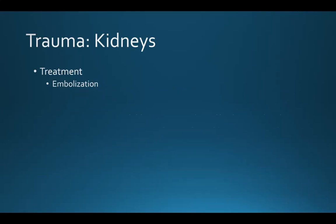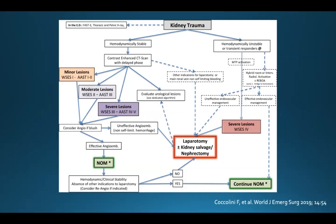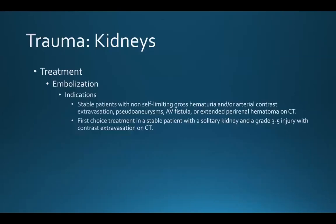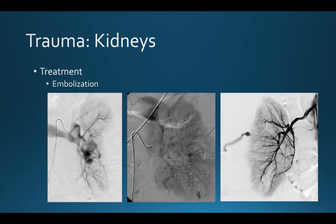Embolization plays an important role in renal trauma. An algorithm published in 2019 in the World Journal of Emergency Surgery shows that patients with every single grade of renal injury can potentially be candidates for embolization based on CT findings. We typically perform embolization in stable patients with non-self-limiting gross hematuria and/or contrast extravasation, pseudoaneurysms, AV fistulas, or extended perirenal hematomas on CT. It is the first-choice treatment in a stable patient with a solitary kidney and a grade 3 to 5 injury with contrast extravasation. Angiography can show arteriovenous fistula, pseudoaneurysm, and gross extravasation of contrast.